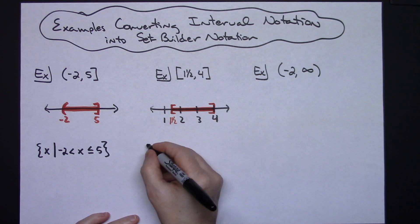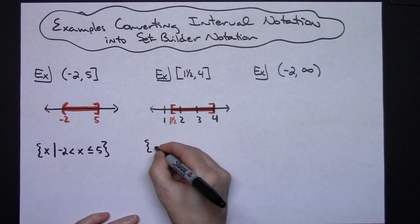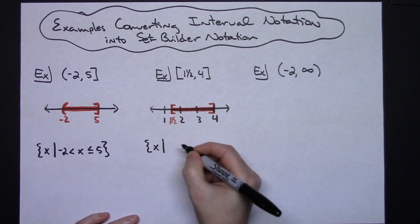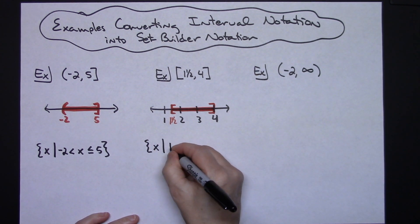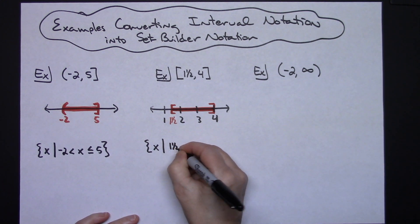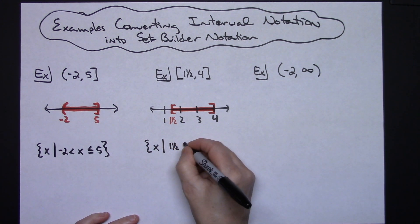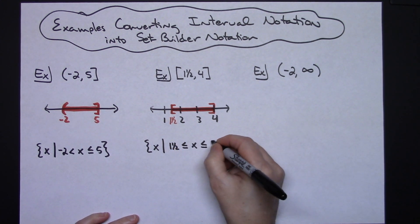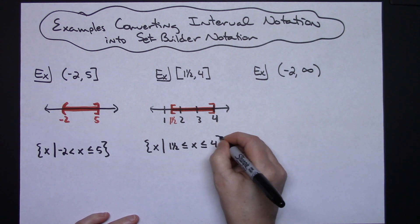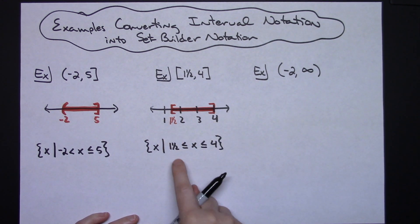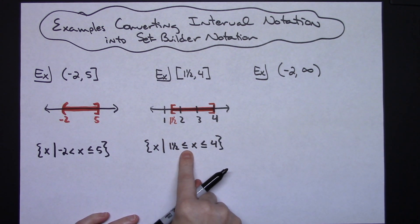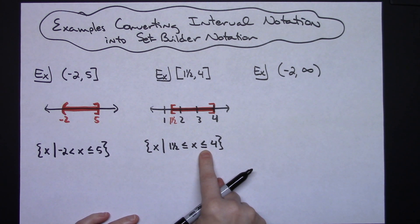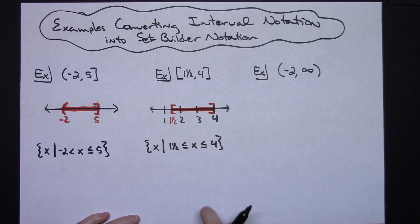Going into set builder notation, it is the set of all x such that one and a half is less than or equal to x is less than or equal to four. Since both endpoints have square brackets, I need less than or equal to for the one and a half and less than or equal to for the four.